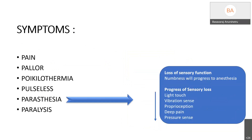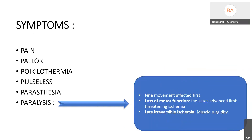Loss of sensory function slowly progresses from numbness to anesthesia, with sensory loss progressing from light touch to vibration sense, proprioception, and deep pain to pressure sense in that order. Paralysis — fine movements are affected first. Loss of motor function indicates advanced limb-threatening ischemia, and late irreversible ischemia implies muscle rigidity.